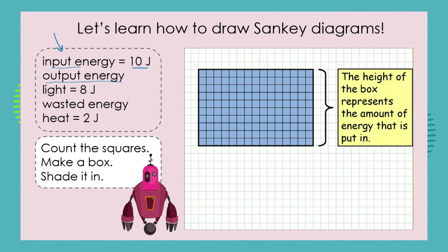Here is the extracted information: input energy — 10 joules. Output energy is made up of useful energy, which is light at 8 joules, plus wasted energy, which is heat at 2 joules.